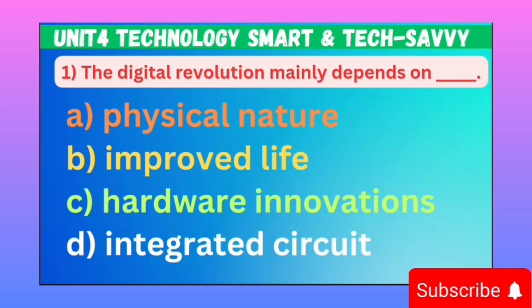MCQ number one: Digital regulation mainly depends on dash-dash. Option A: Physical nature. B: Improved life. C: Hardware innovation. D: Integrated circuit. Correct option is C, Hardware innovation.